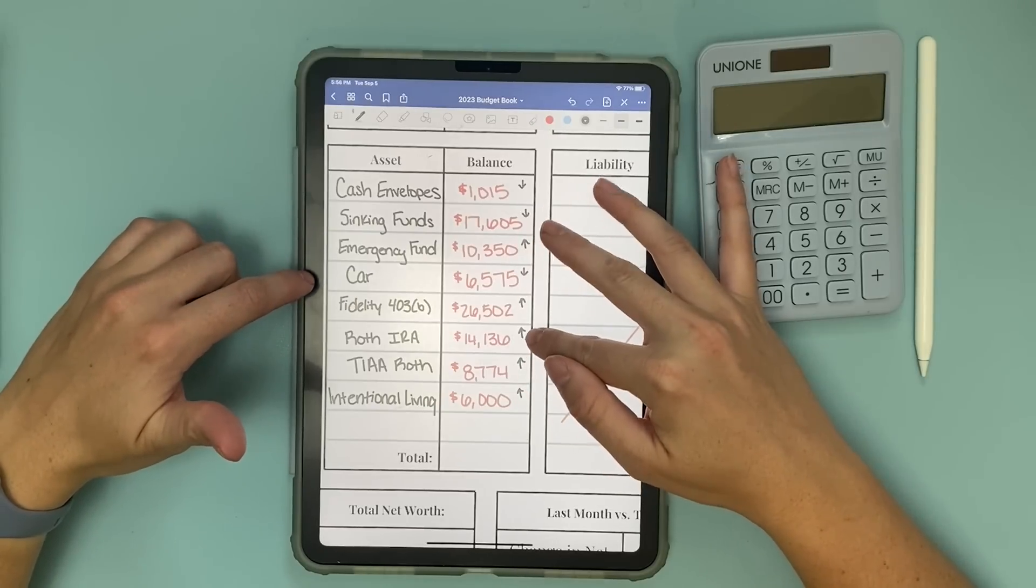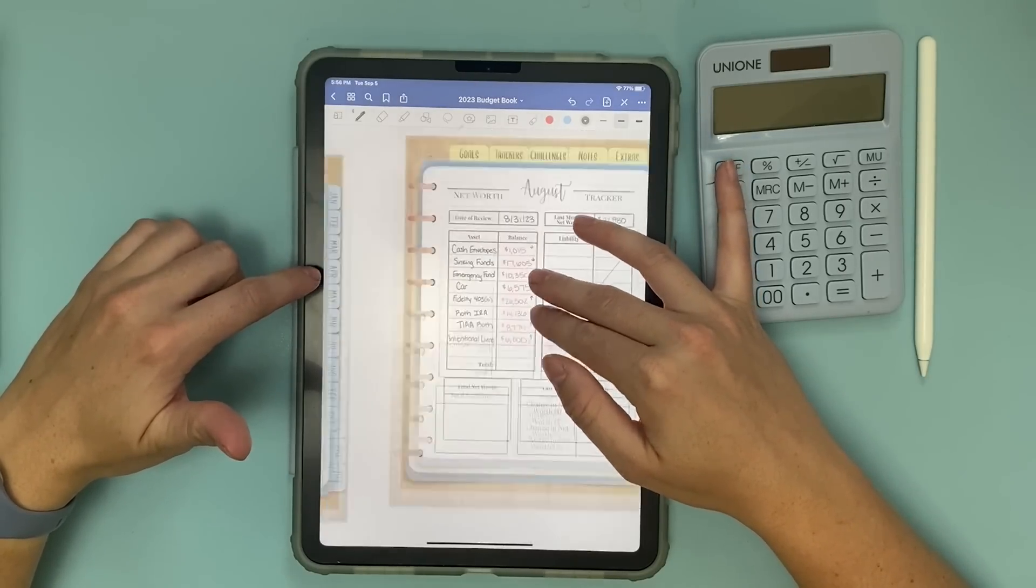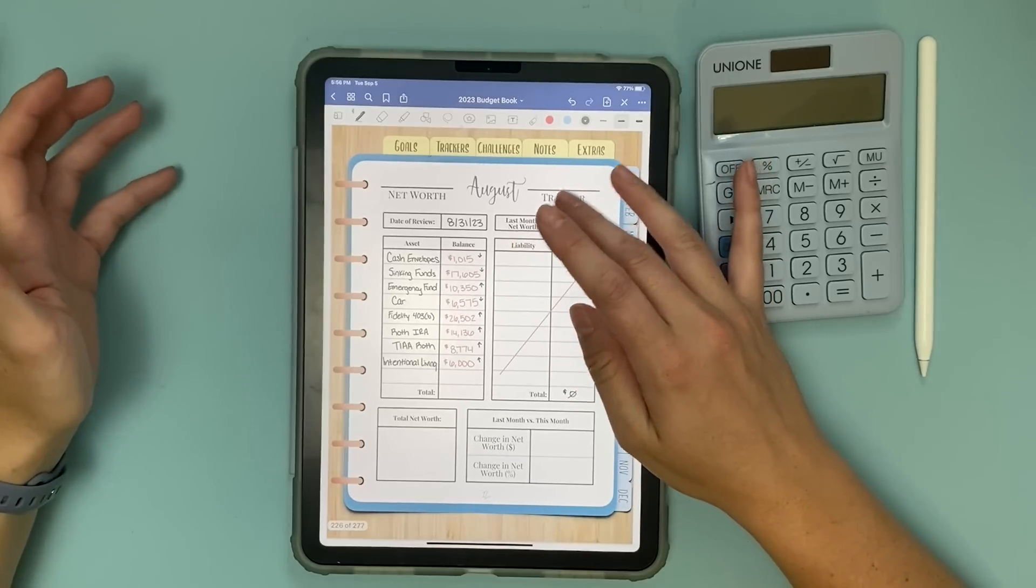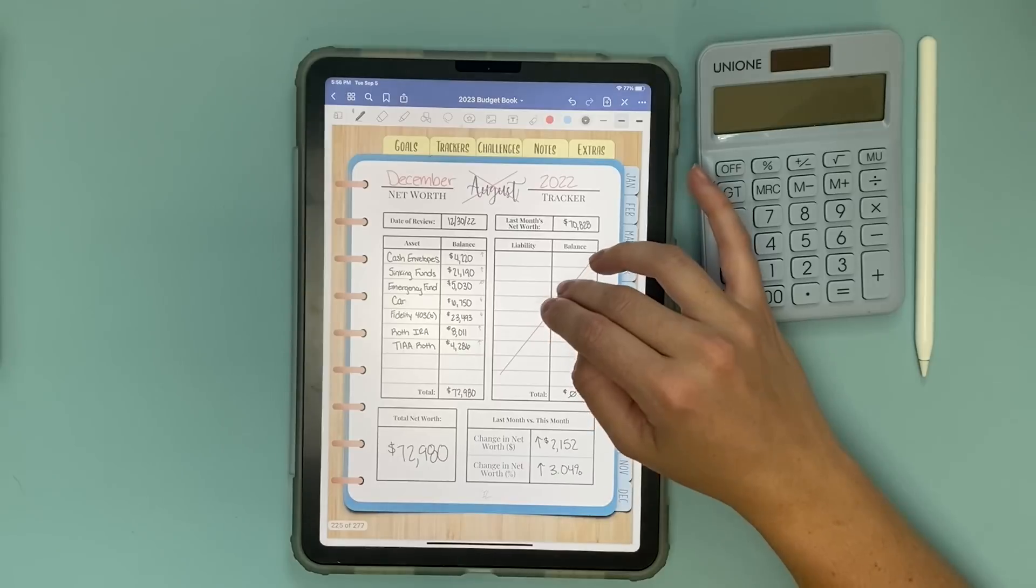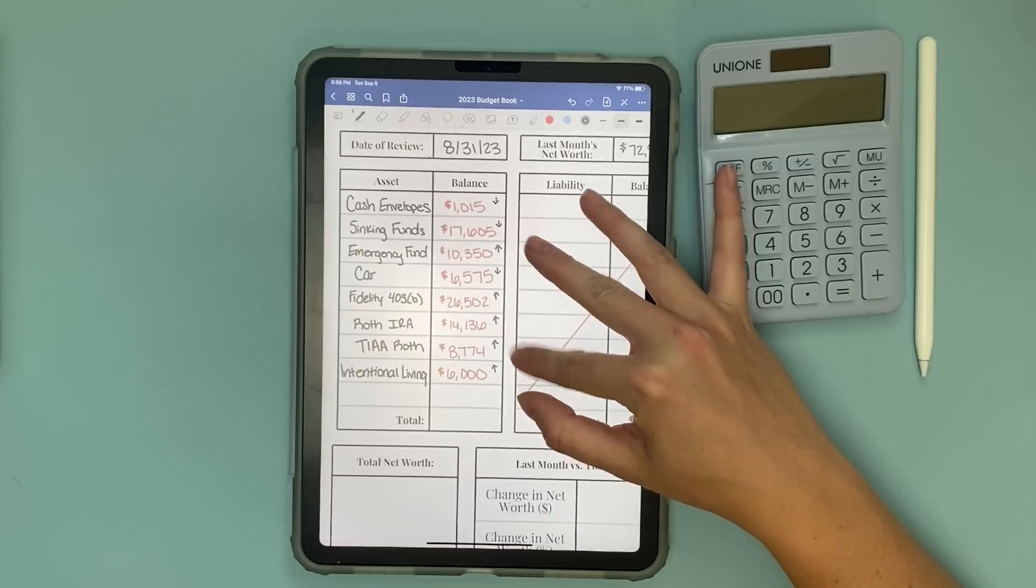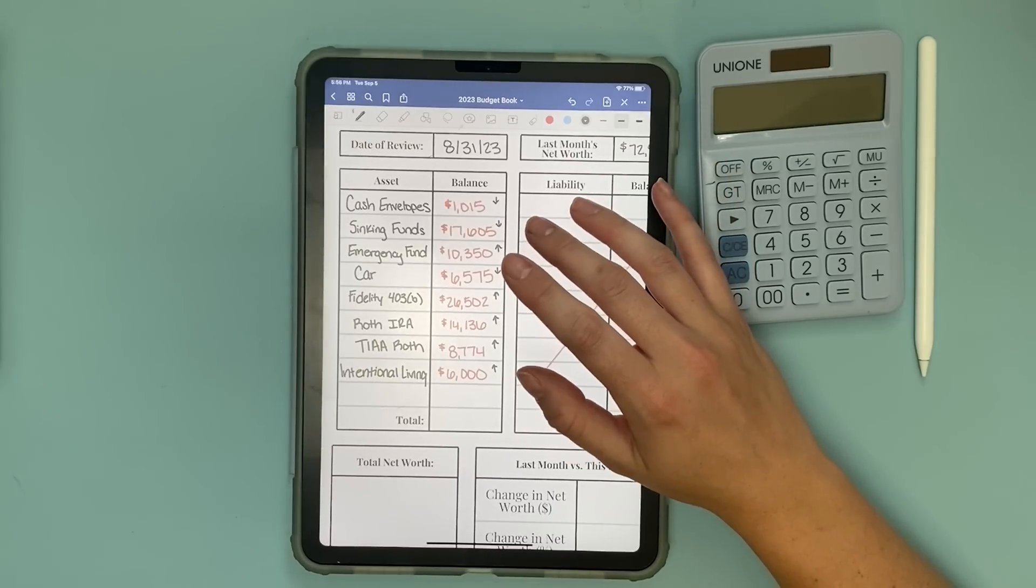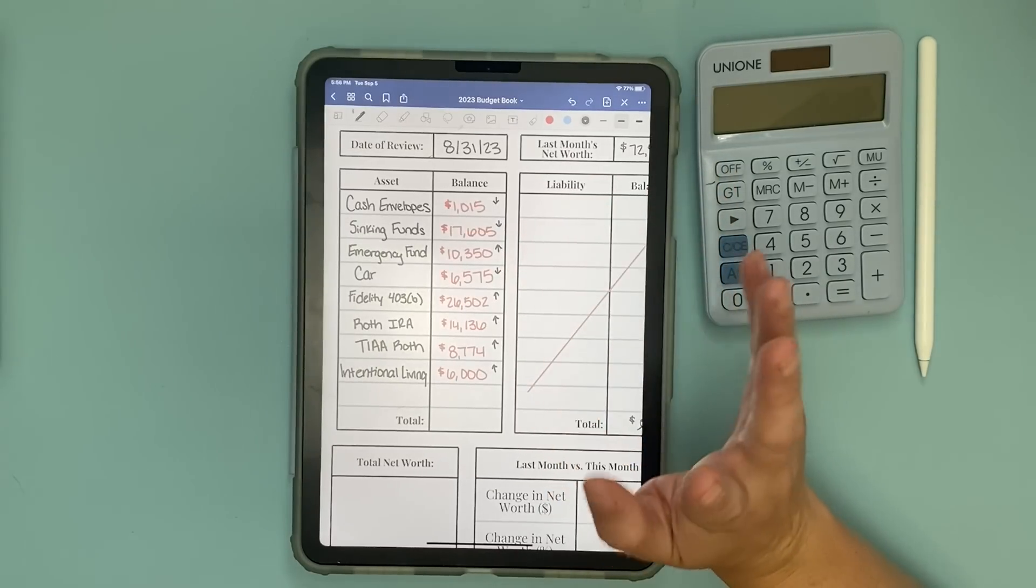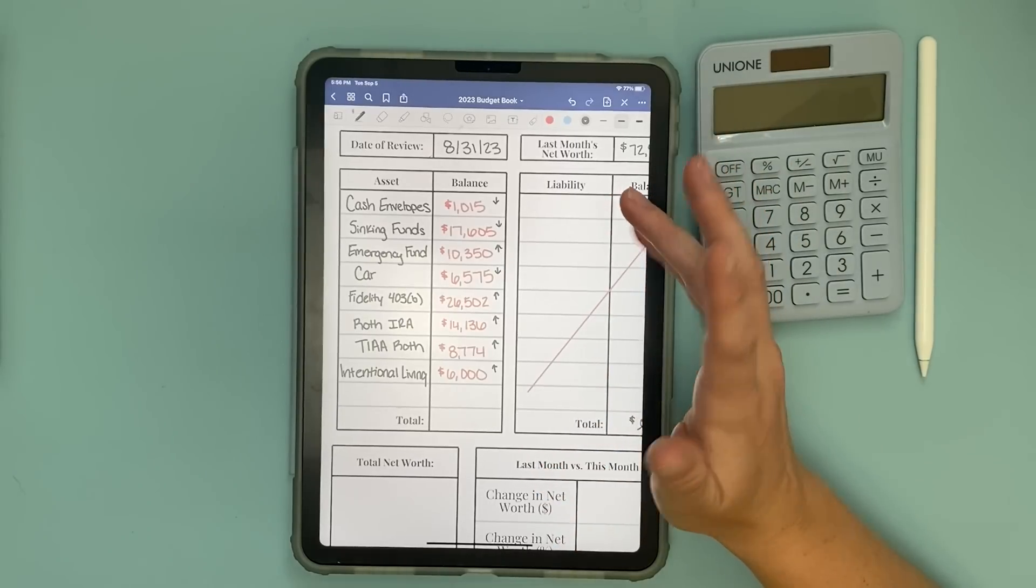My car went down in worth. It's $6,575 according to Credit Karma right now which is about $200 less than what it was worth at the end of December which makes sense given used cars aren't as valuable as they used to be.